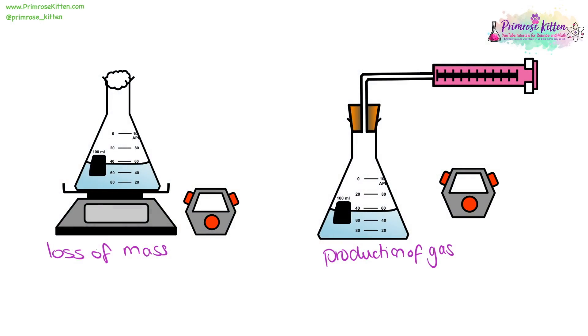There are a range of different ways you can follow a reaction. For example, you can look at the loss of mass. This would be good if you were adding something solid, like marble chips, into a liquid, and you knew that a gas was going to be produced. The gas would just go off through the cotton wool and out, and the mass will go down.